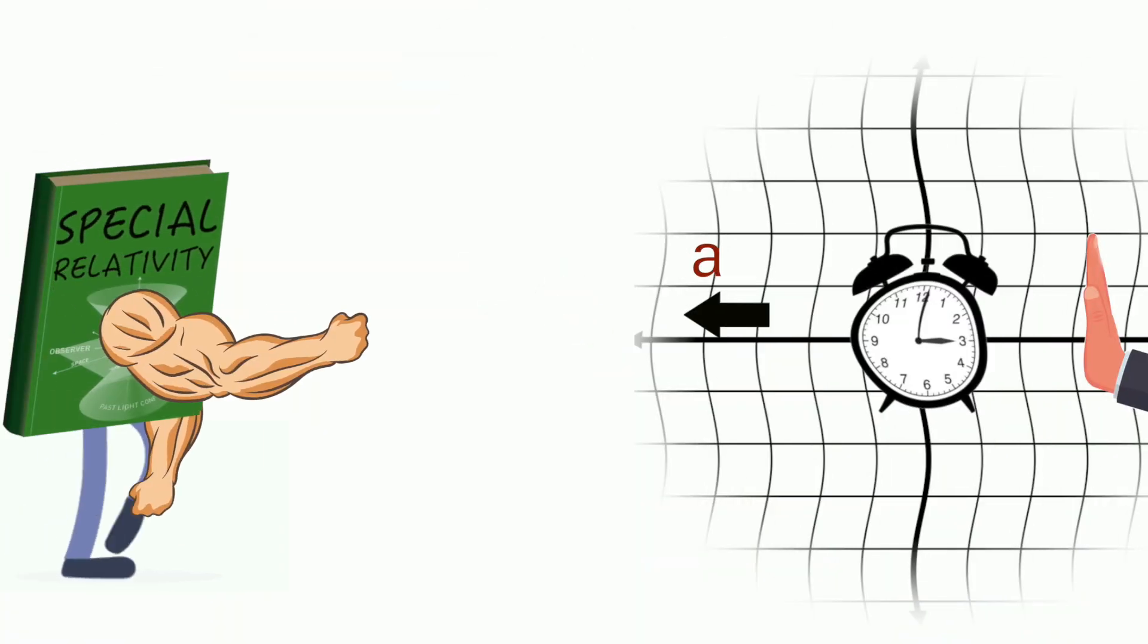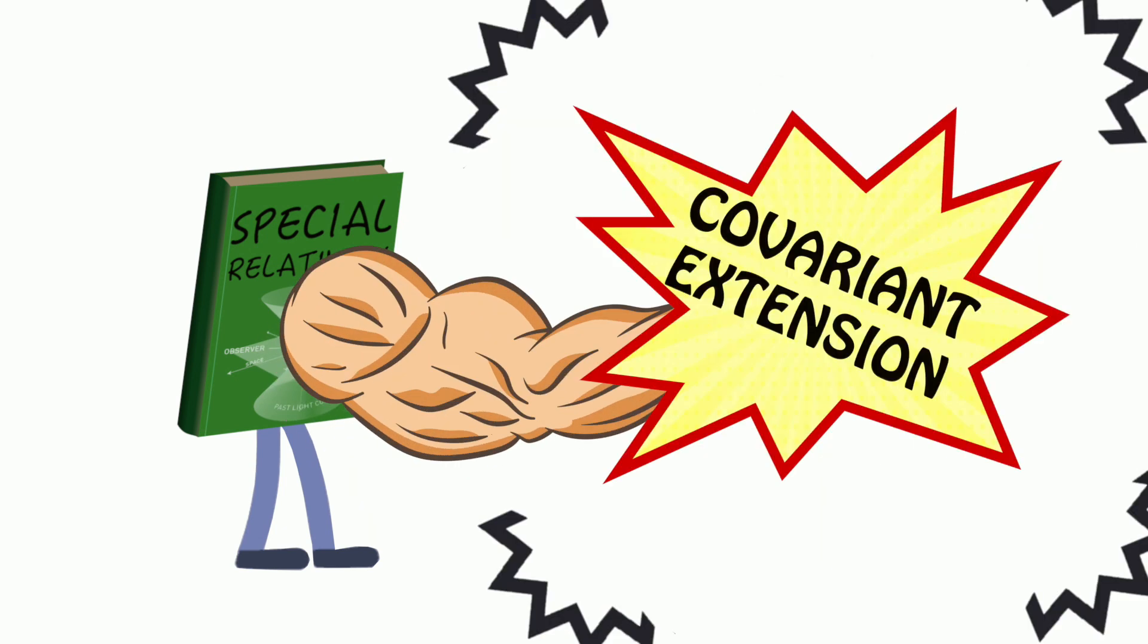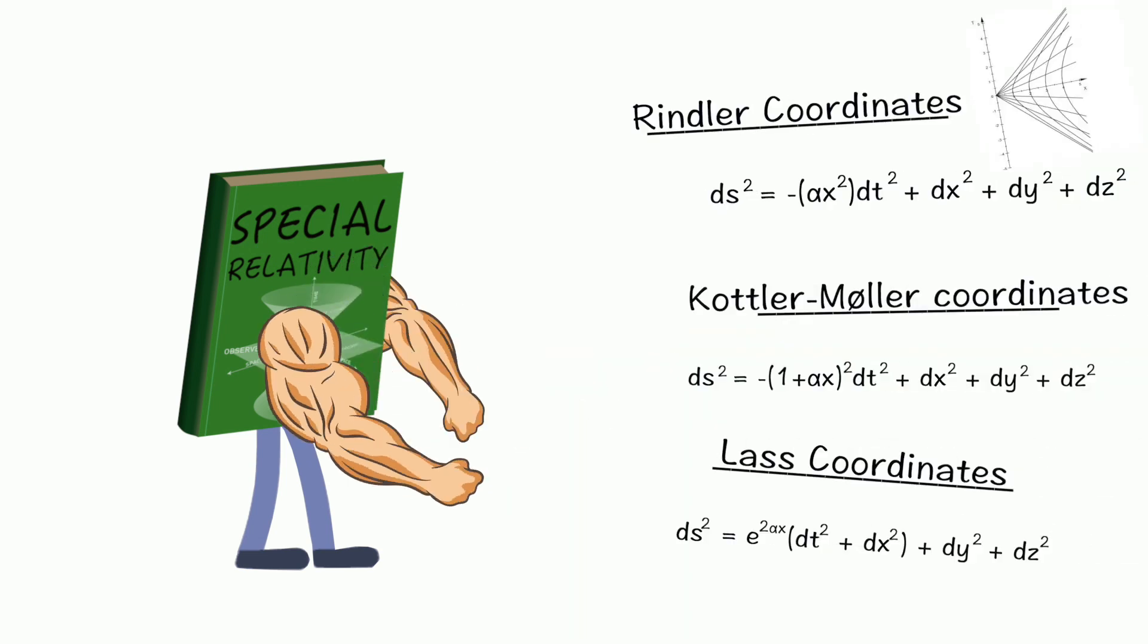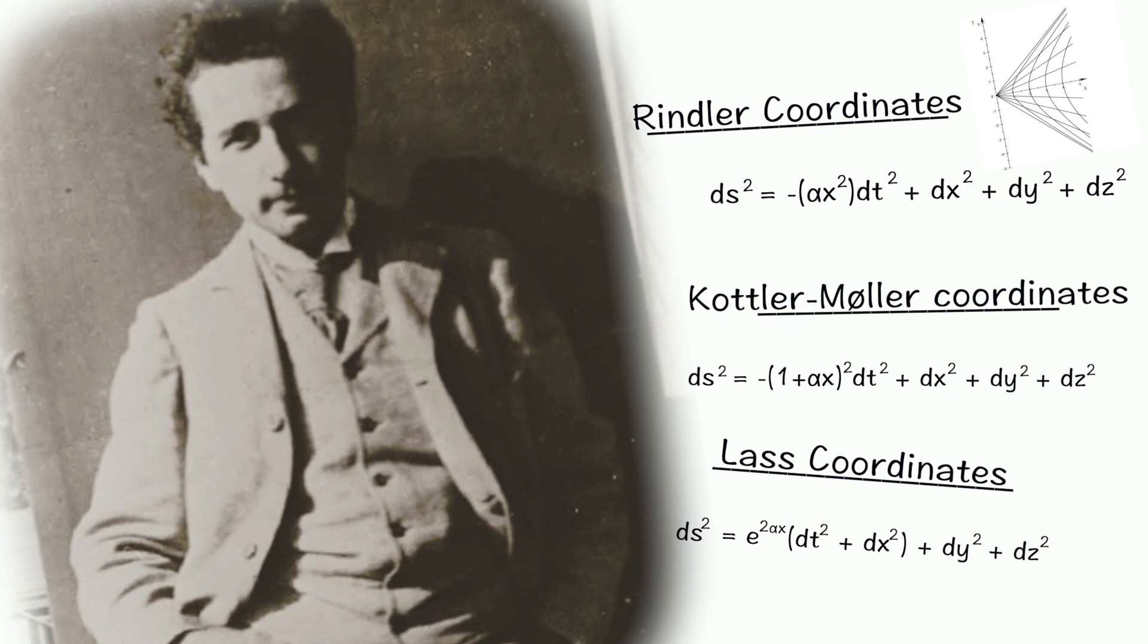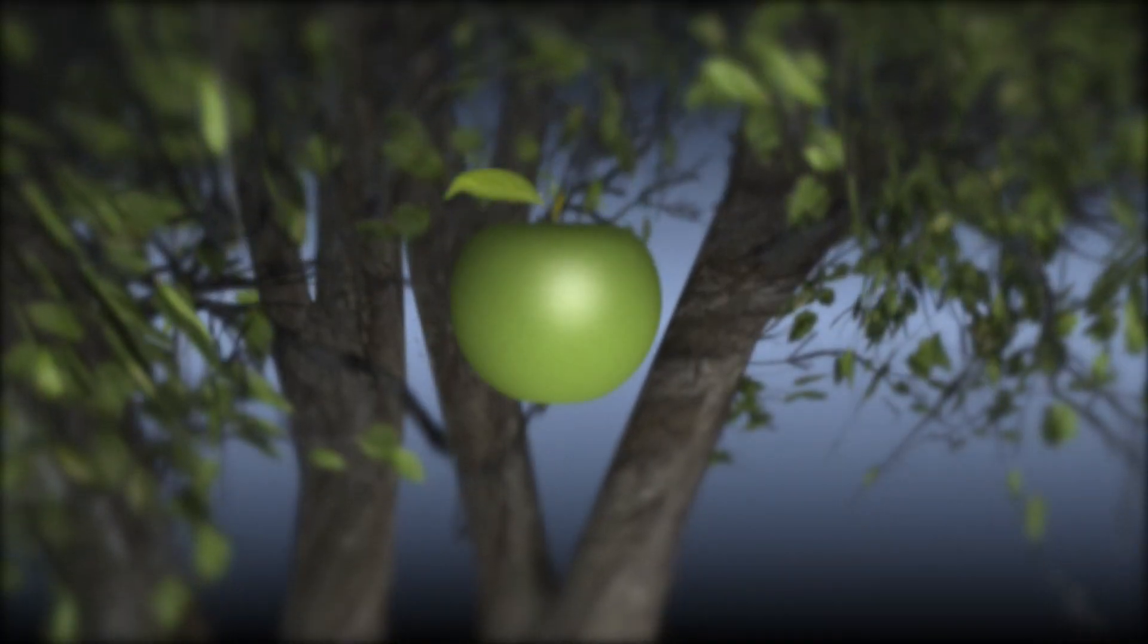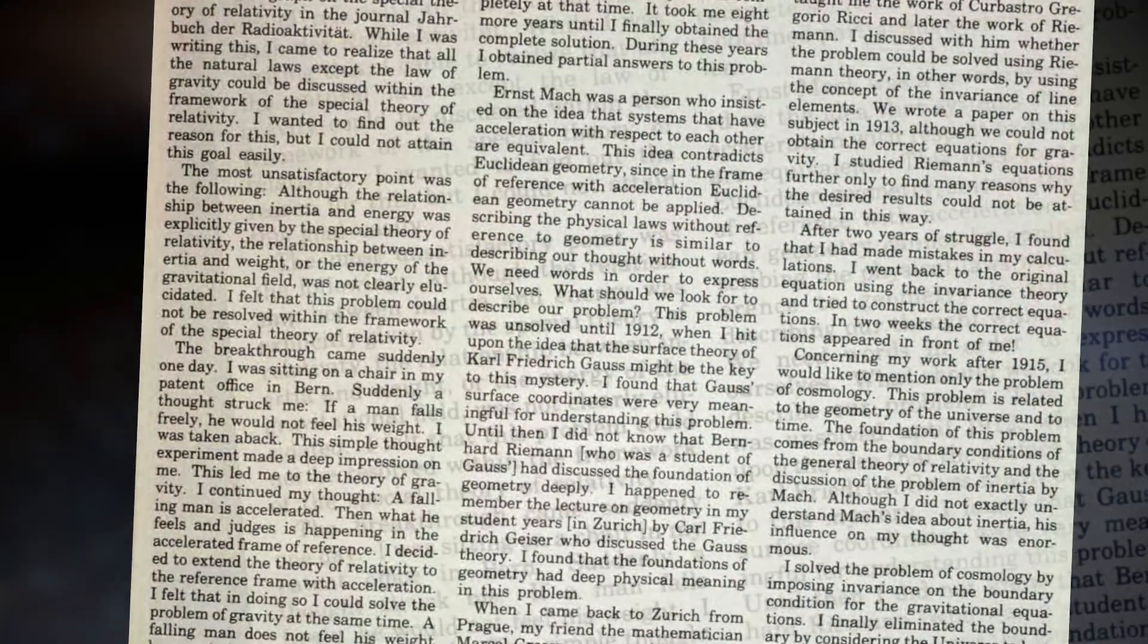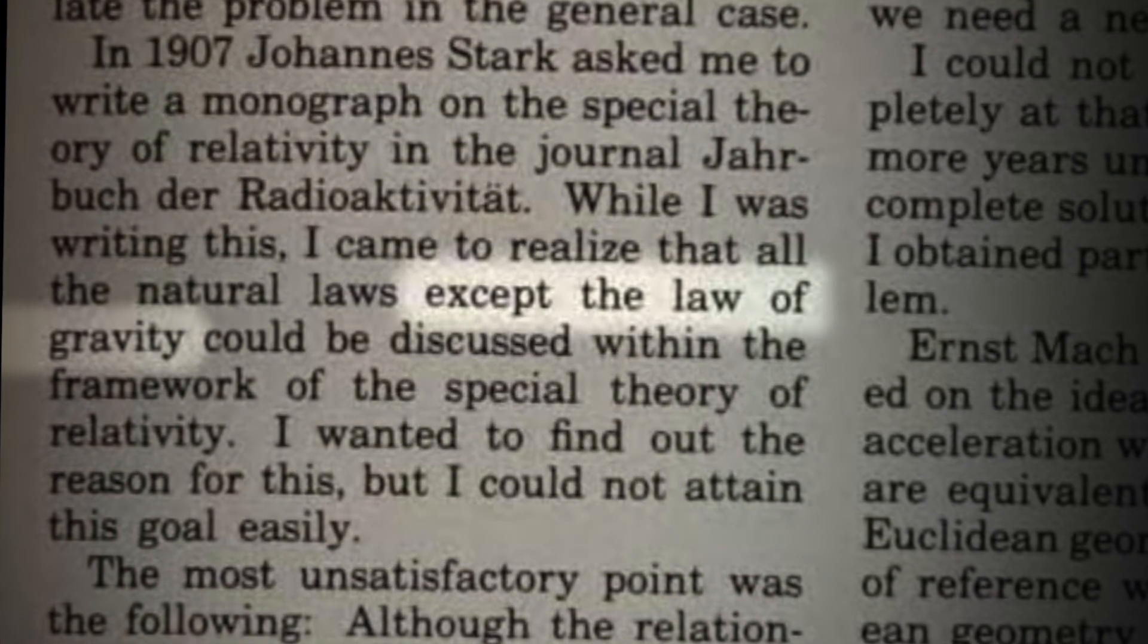Special relativity has no issue handling accelerated frames of reference. Its postulates merely have to be covariantly extended in more complex forms. It's not likely this distinction eluded someone as intelligent as Einstein. More probably, something else about accelerated frames and special relativity bothered him. But what was it exactly? His take on the Twin Paradox during his later career gives us some insight.